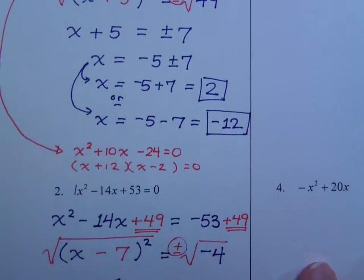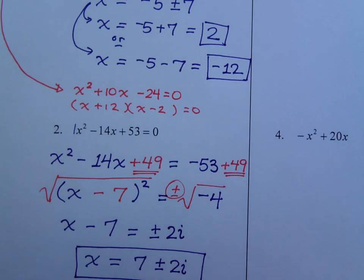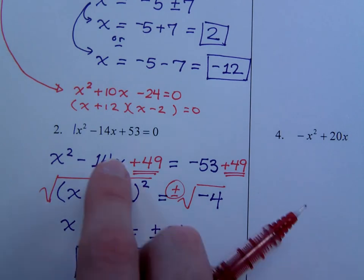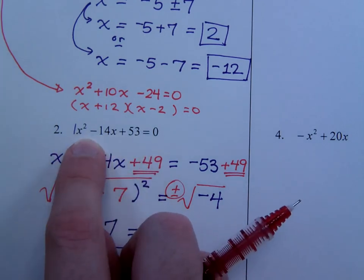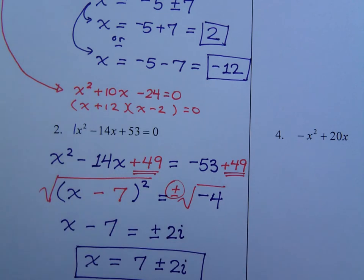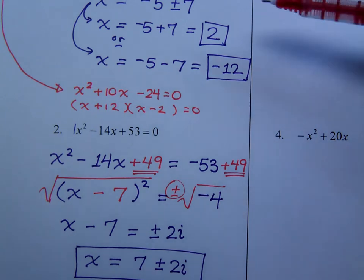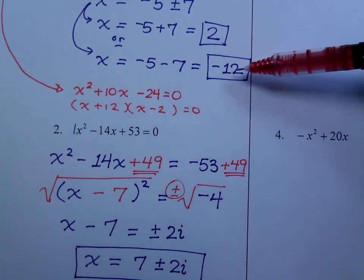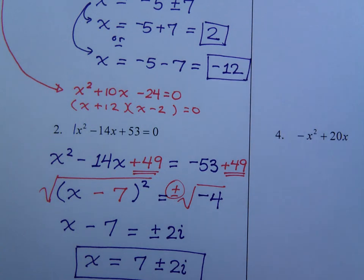But, this last problem that I did, 7 plus or minus 2i, no matter what you do to this guy, you're never going to be able to factor him. He doesn't factor using real numbers. So, it's just one of those things to try out. If your solutions are nice, pretty numbers like the 2 and the negative 12, see if you could have factored it.